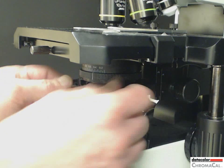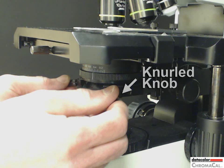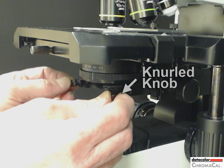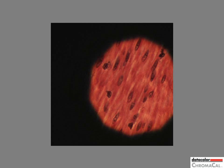Finally, if the field diaphragm blades are not centered, use the knurled knobs to center the shadow image. Here's what you'll see on the microscope.